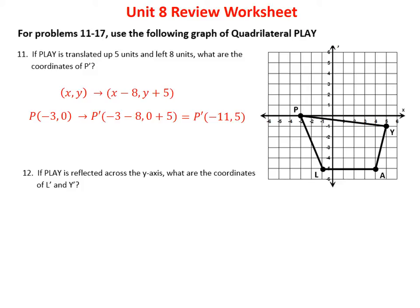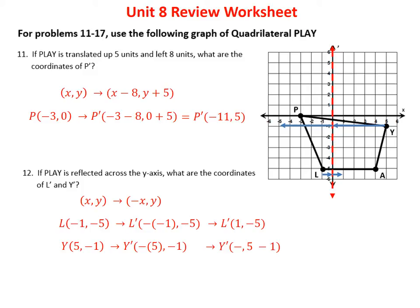Number 12 says PLAY is reflected across the y-axis. What are the coordinates of L prime and Y prime? A reflection across the y-axis flips the x but keeps y the same. Point L at (−1, −5): the opposite of −1 is 1, so L prime is (1, −5). Point Y at (5, −1): the opposite of 5 is −5, so Y prime is (−5, 1). Both match what we see on the graph.